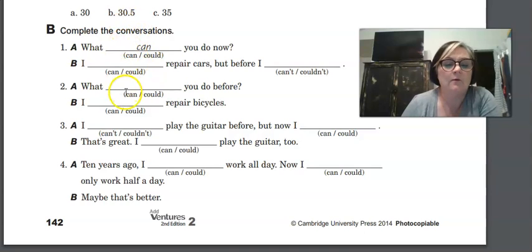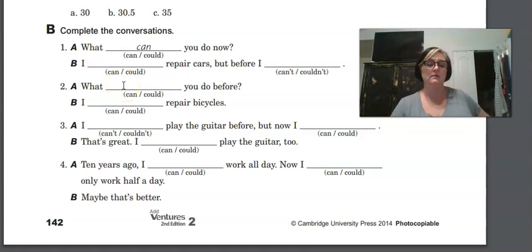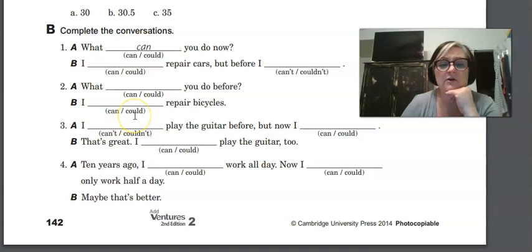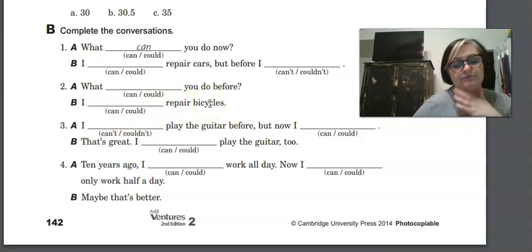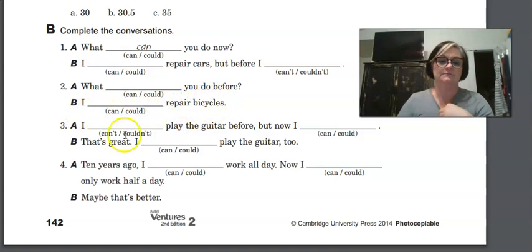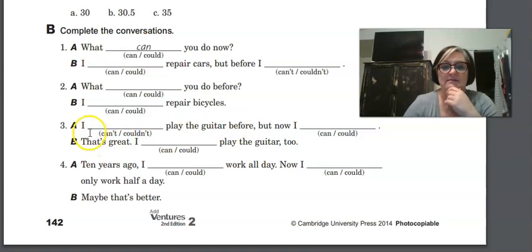Number two, what can or could you do before? What could you do before? Because we're talking about the past, right? So we're going to talk about the past again. I could repair bicycles. I can't or couldn't play the guitar before. So that's talking about the past. So I couldn't play the guitar before, but now, talking about the present, now I can. So I couldn't play the guitar before, but now I can. That's great. I can or could play the guitar too. So we're talking about the present, so it's I can play the guitar too.